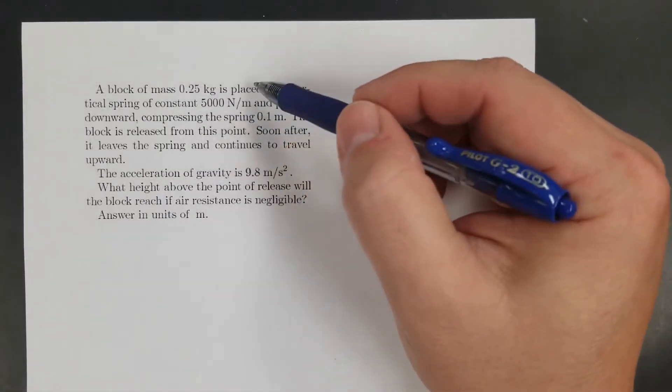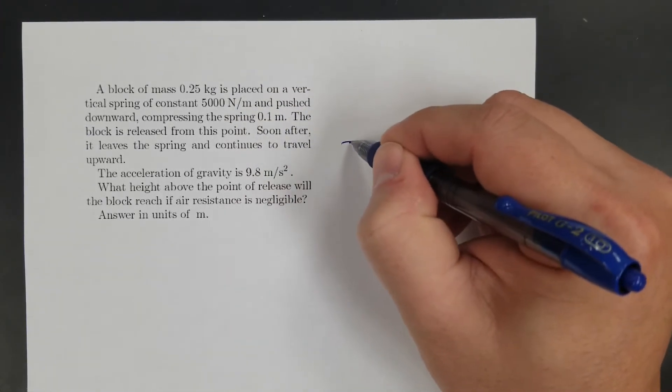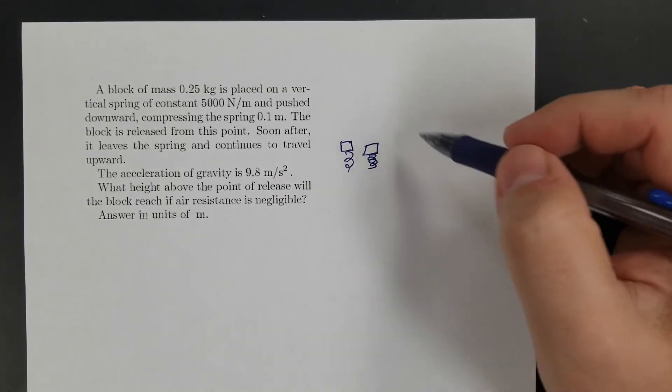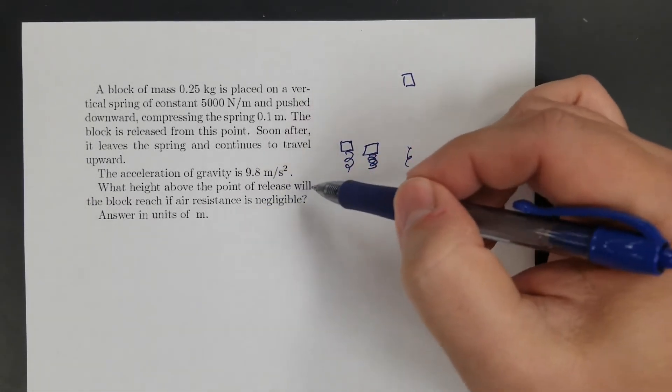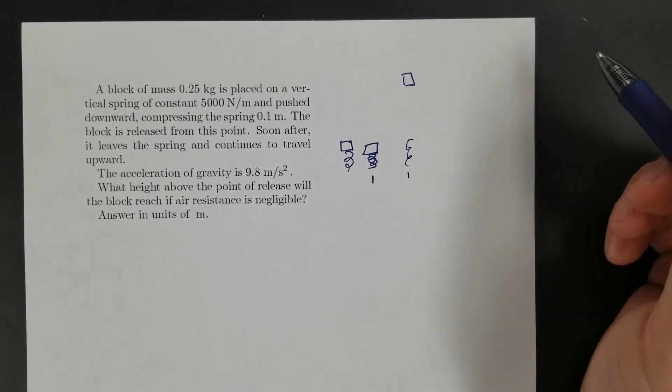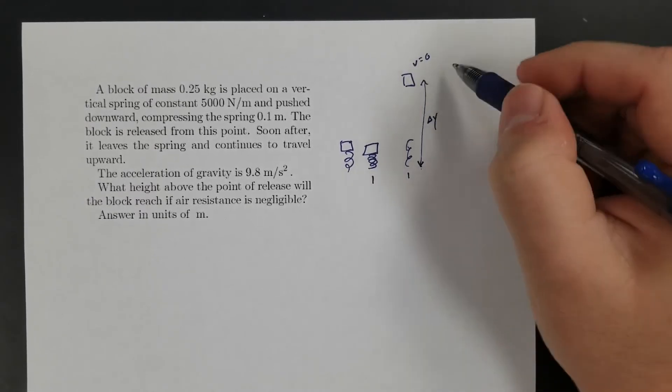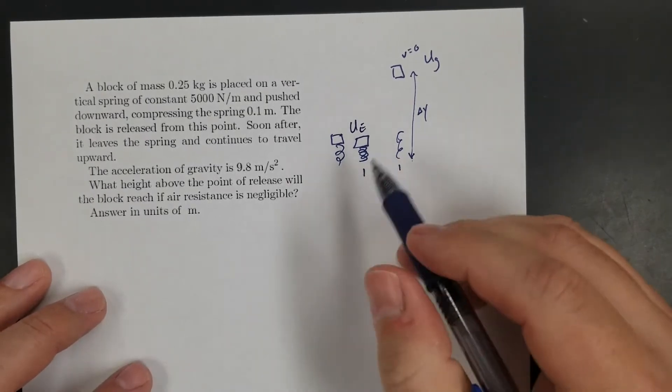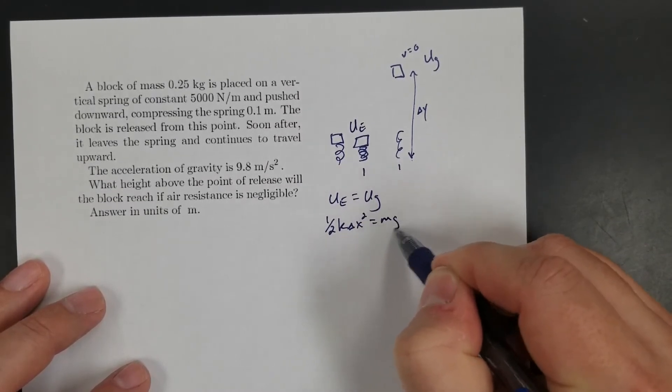Next one: block of mass 0.25 kilograms placed on a vertical spring, constant 5,000 newtons per meter. Push down, compressing the spring. This is kind of the same thing except it's starting here, and then it's pushed down compressing the spring. It helps if you draw these things - you don't have to be an artist. It shoots up and continues to leave. What height above the point of release will the block reach if air resistance is negligible? So really I'm going between here and here. If this thing goes all the way up, that means the velocity at the top is going to be zero, so this will all be gravitational. And then here when I squish that spring, it's all going to be elastic. So this is just the backwards of the first problem: elastic equals gravitational, so ½kx² = mg∆y.